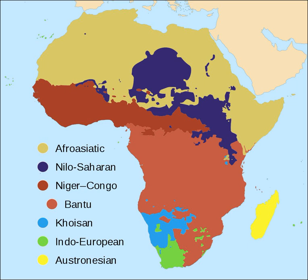Of the 1 billion Africans, about 17% speak an Arabic dialect. About 10% speak Swahili, the lingua franca of Southeast Africa; about 5% speak a Berber dialect; and about 5% speak Hausa, which serves as a lingua franca in much of the Sahel. Other important West African languages are Yoruba, Igbo and Fula. Major Horn of Africa languages are Amharic, Oromo and Somali. Important South African languages are Zulu, Xhosa and Afrikaans. English, French and Portuguese are also important languages in Africa.